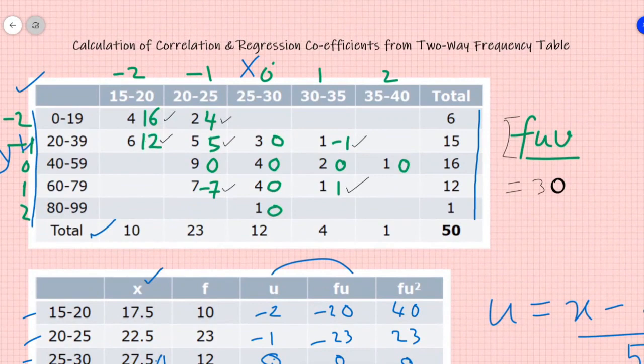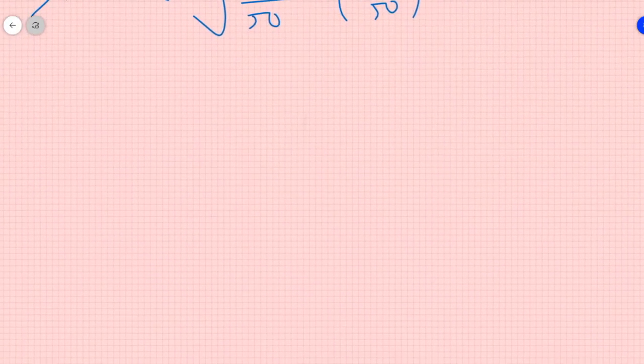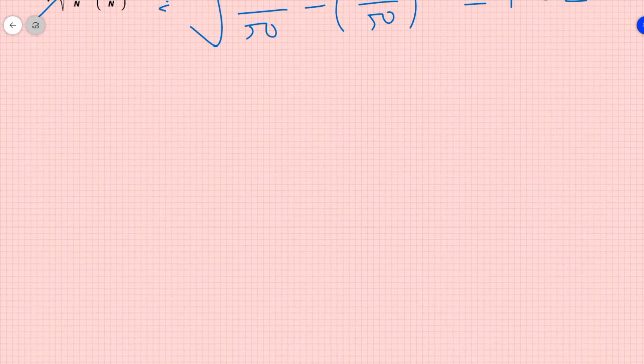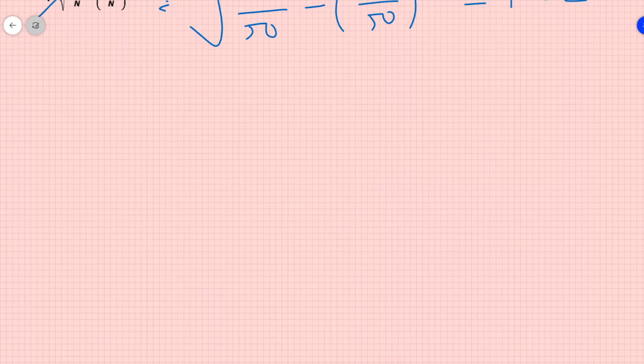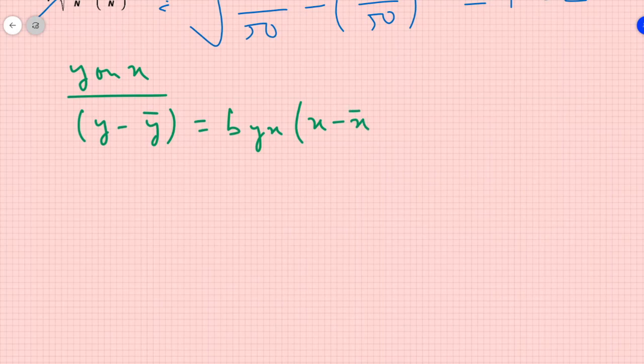So for this particular table, it is 0.43. Now few things which we need to do to find the regression coefficient and regression line. Suppose we need to find regression line of y on x. The formula is: regression line of y on x is y minus y bar equals to byx into x minus x bar. So we need x bar, we need y bar, we need regression coefficient of y on x.